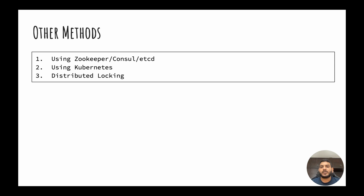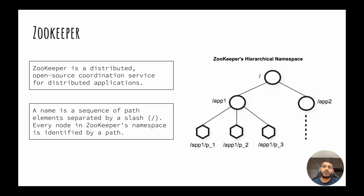So what are the alternate methods? We can use third-party tools like Zookeeper, Consul, or etcd. These are distributed key-value stores which internally provide the capability to do leader election, though this adds a dependency on these third-party tools — that is the trade-off. We can also use Kubernetes to implement the leader election process if our system is already running on Kubernetes. Alternatively, you can write your own distributed locking techniques. In this video, we will focus on the approach using Zookeeper for leader election.